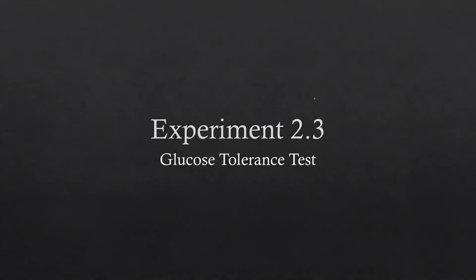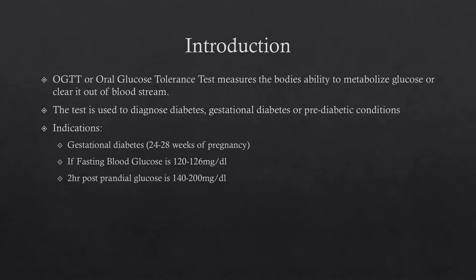Today we are going to discuss experiment 2.3, which is the Glucose Tolerance Test. The Glucose Tolerance Test, or OGTT (Oral Glucose Tolerance Test), measures the body's ability to metabolize glucose, or how much time it needs to clear it out of the bloodstream.